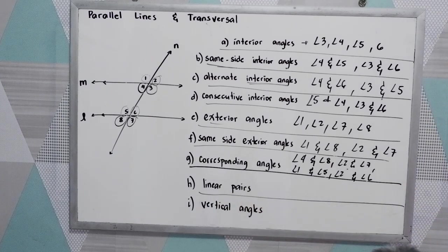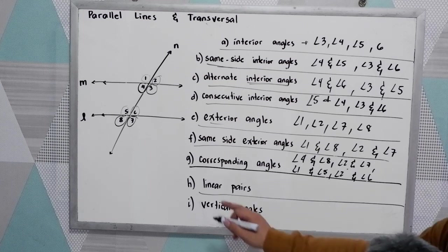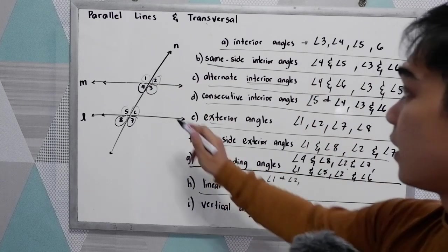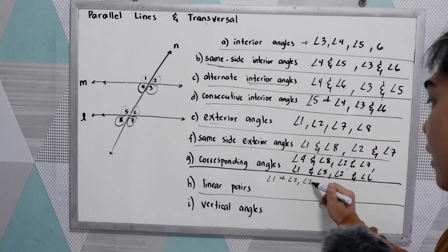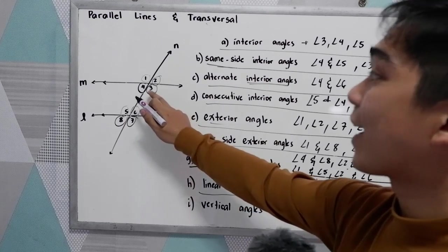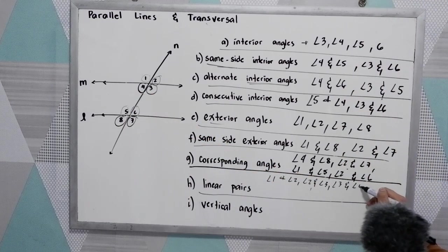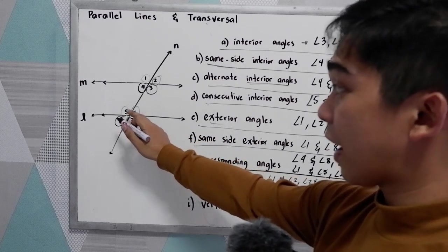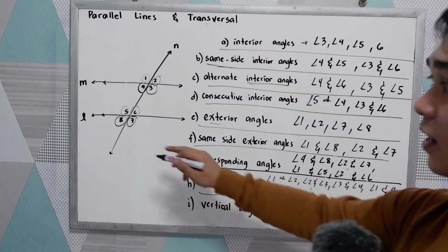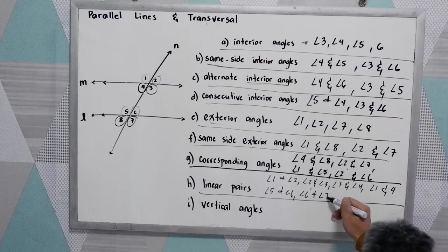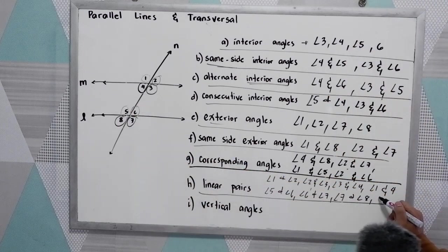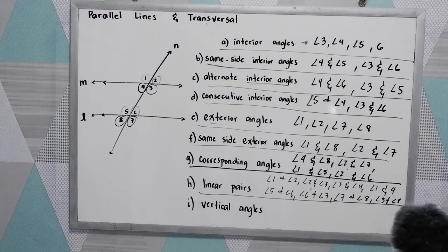Now we have the linear pair. Linear pairs are supplementary — they lie on a straight line. We have angle 1 and angle 2, angle 2 and angle 3, angle 3 and angle 4, angle 1 and angle 4. Then angle 5 and angle 6, angle 6 and angle 7, angle 7 and angle 8, and angle 5 and angle 8. Those are the linear pairs.